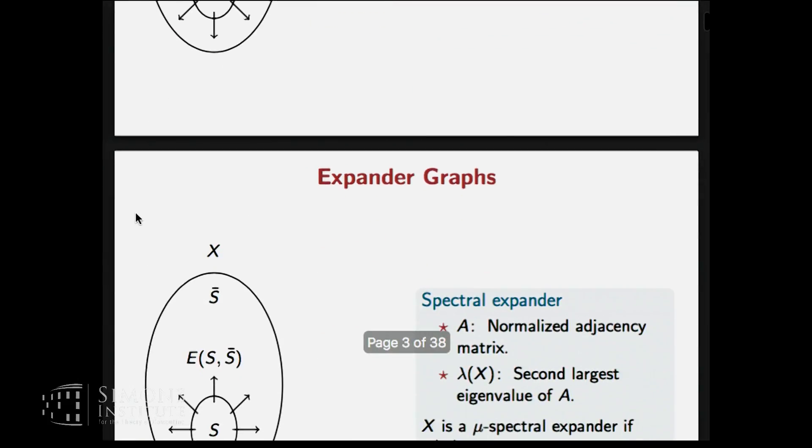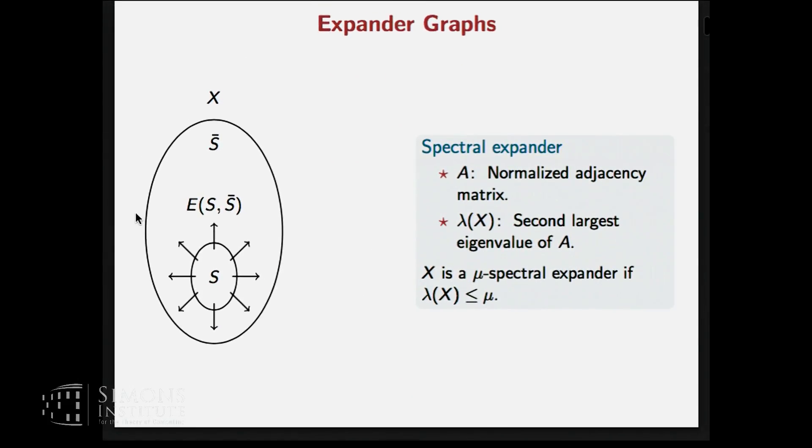So we won't directly deal with edge expansion. Instead, we will look at spectral expansion. So if A is the normalized adjacency matrix of the graph, it's normalized so the highest eigenvalue is 1. And the next largest eigenvalue is what defines the expansion of the graph. And if it is a constant bounded away from 1, then we have a good spectral expansion in the graph.